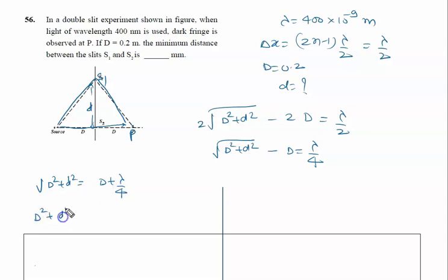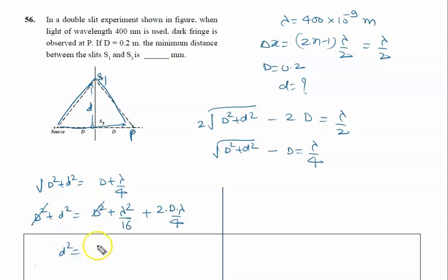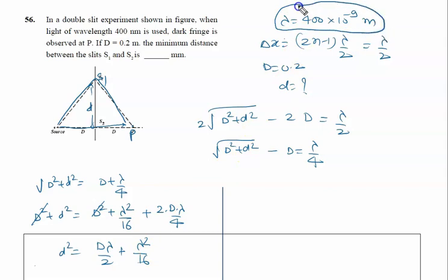Squaring both sides: D² + d² = D² + (λ/4)² + 2·D·(λ/4). The D² terms cancel, giving d² = Dλ/2 + λ²/16. Since λ is very small, λ²/16 is negligible and can be approximated as zero. So finally d² ≈ Dλ/2.